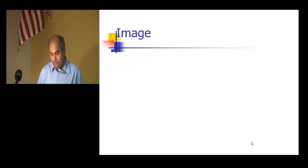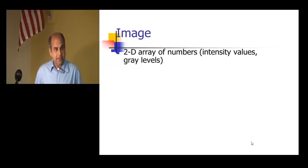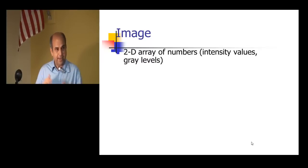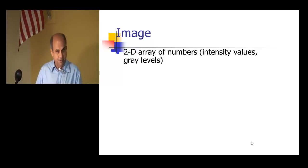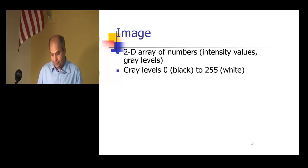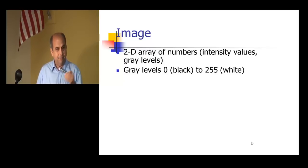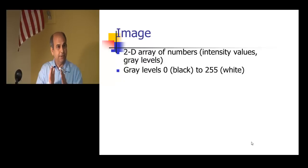If you look at an image, it is essentially a 2D array — a matrix of numbers. Each element in the array is an intensity value at gray level. When you have gray level zero, it's completely black; when it's 255, it's completely white; and if it's between, then it's gray.